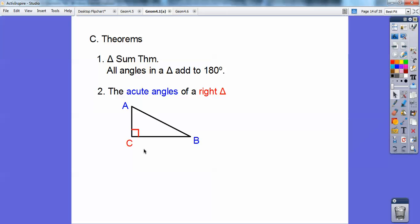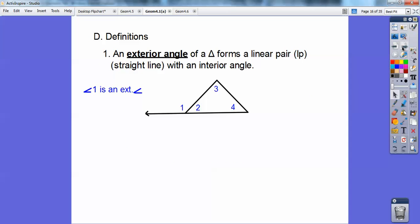Triangles are 180. If that's 90, then these two guys got to be the rest of the 180, so these two guys got to be 90 to match up with that 90. And so 90 means if they add to 90, they're complementary. So the acute angles of a right triangle are complementary, so A and B would be complementary.